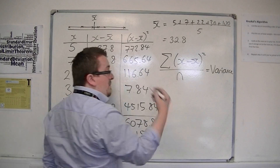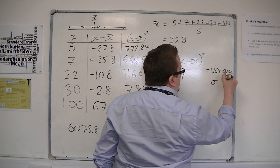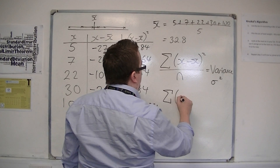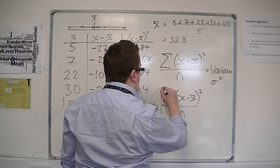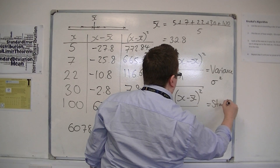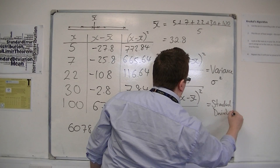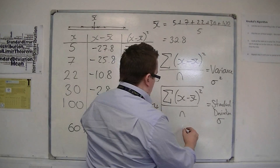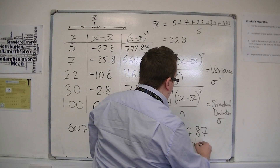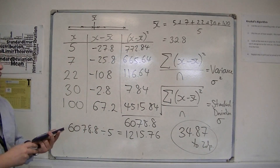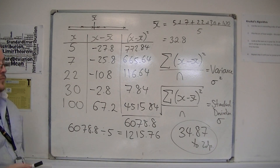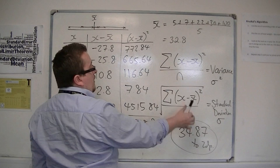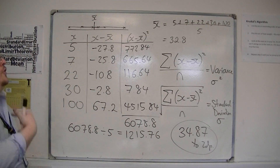What we call this — without the square root — is the variance. The symbol we use is a lowercase sigma, and we write it as sigma-squared for the variance. So if you want the standard deviation, then we need to square root our answer. Taking the square root gives us 34.87 to two decimal places, and that would be your standard deviation for these numbers. That makes a little bit more sense — to say that, on average, these points are 34.87 away from the mean.